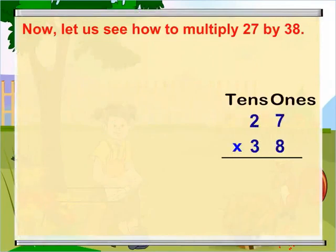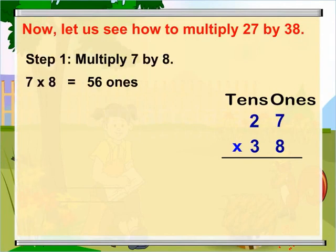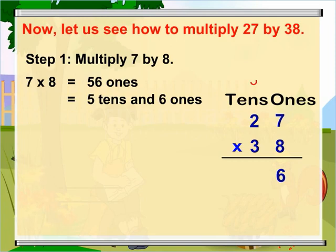Let us now find out how to multiply 27 by 38. First, multiply 7 ones by 8 to get 56 ones. Now, rename 56 ones as 5 tens and 6 ones. So, write 6 at 1's place and carry over 5 to 10's place.